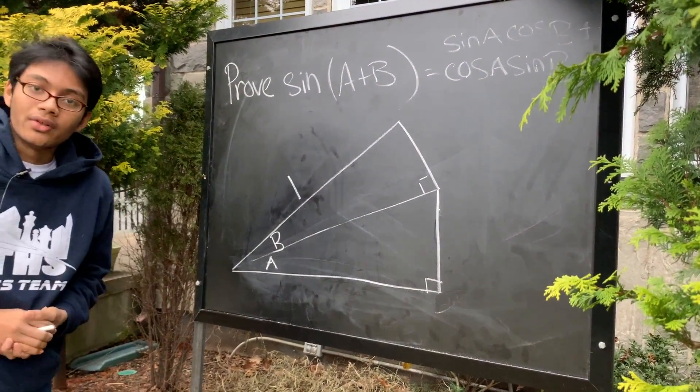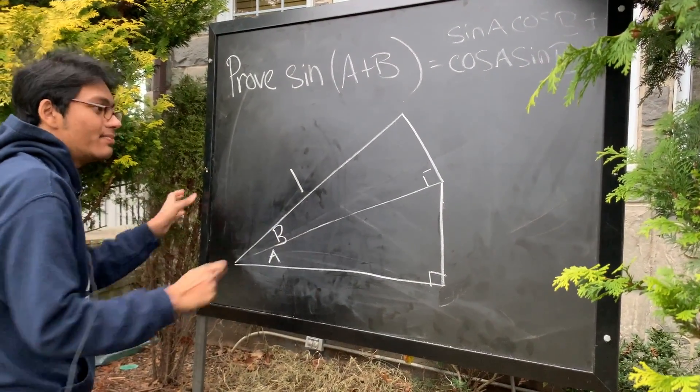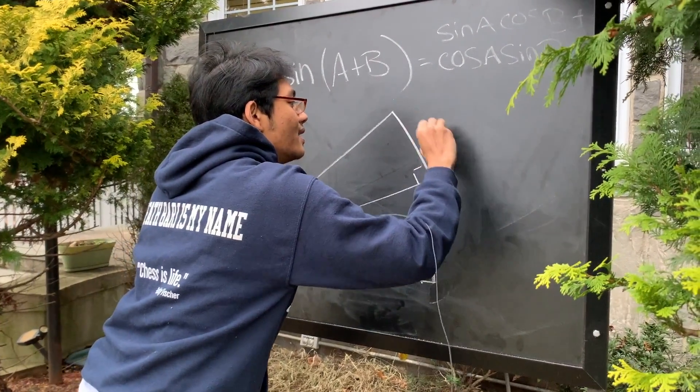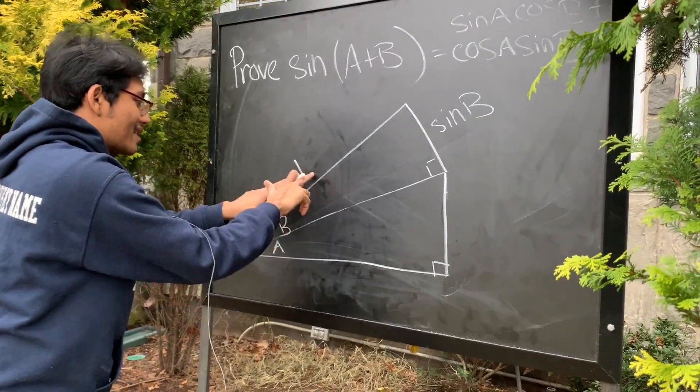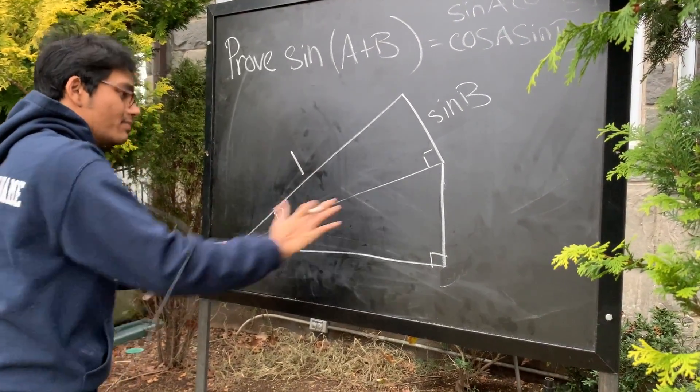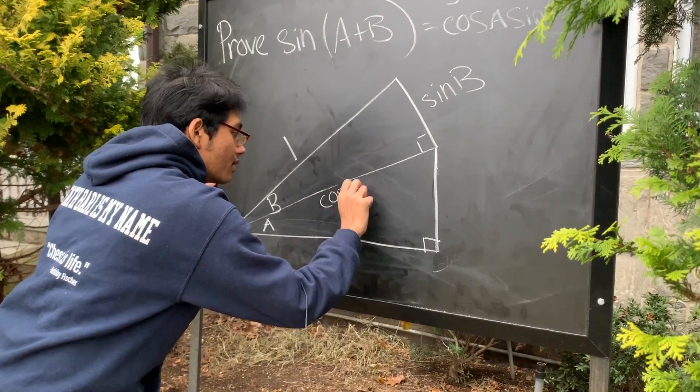Okay, so now what do we do? Well, now we can say that since this hypotenuse is 1 and this angle is B, this side must be sine of B, right? Likewise, since this hypotenuse is 1 and this angle is B, this leg must be cosine of B.